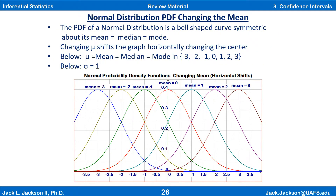Recall that the probability density function, PDF, of a normal distribution is a bell-shaped curve which is symmetric about its mean. Its mean, median, and mode are all the same. Changing the mean, mu, shifts the graph horizontally, changing the center. The graphic here shows several normal PDFs, all with standard deviation 1, and means from negative 3 through positive 3. Notice that the shape is exactly the same, but their locations are horizontally shifted to center on the respective mean values.